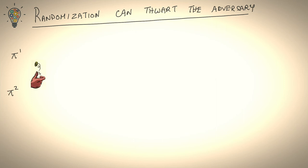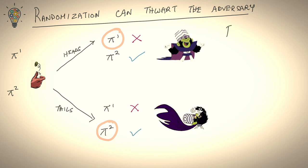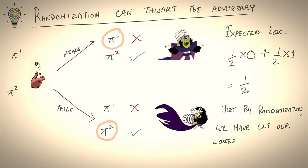Randomization prevents the adversary from perfectly predicting what we will do and trapping us. So let's take a look at how this would work. Let's say we have two experts. We flip a coin, and if the coin comes out as heads, we choose expert 1. And in this case, expert 1 happens to be wrong, so the adversary wins. But if the coin comes out to be tails, we choose expert 2. In this case, we win and the adversary is thwarted. If we look at our expected loss across both multiverse, 50% of the time we get a loss of 0, and 50% of the time we get a loss of half, and so our expected loss is half. While in the deterministic case, our loss in this round would have been 1. So just by randomization, we have cut our losses by half.